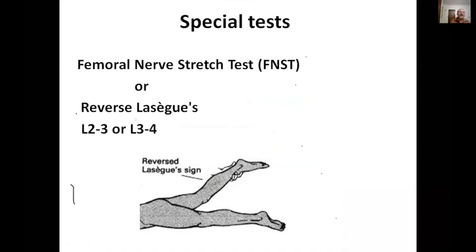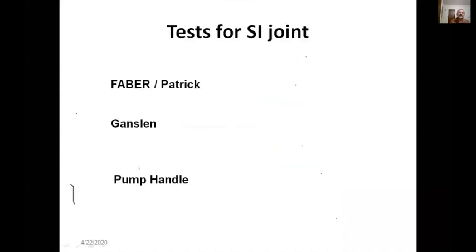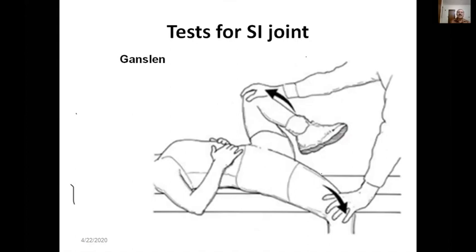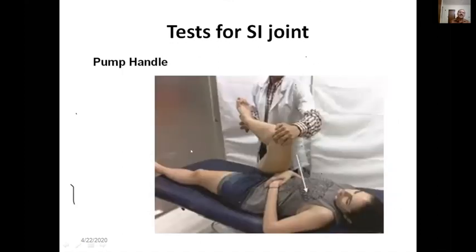For SI joint tests: the FABER test (flexion, abduction, external rotation — Patrick's test) is performed by stabilizing the pelvis on one side while doing FABER on the other. Gaenslen's test involves flexing the opposite hip while the test-side limb is extended off the couch edge into hyperextension of the hip, producing SI joint pain. The pump handle test flexes the hip and knee, bringing them toward the shoulder.